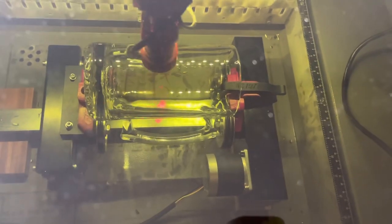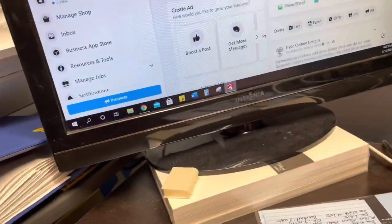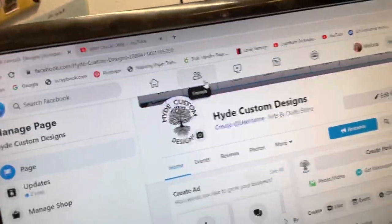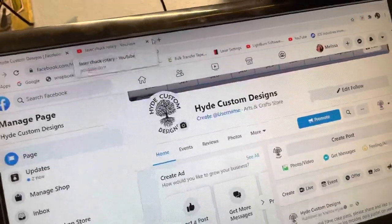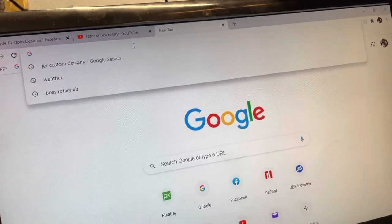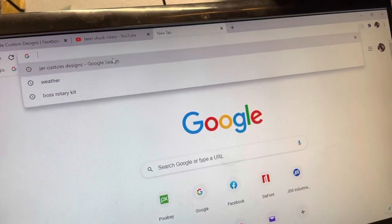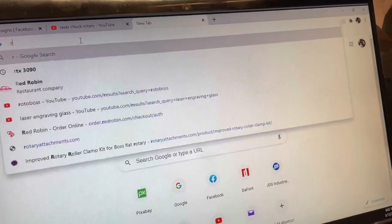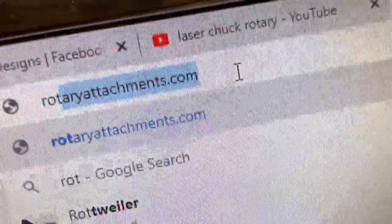The red and black pieces there on the end and then the red piece down here, that's aftermarket. That actually did not come with the machine. I had to buy that separate. And I'm trying to remember what the website is and I'll show you where I purchased it from. I believe it is rotaryattachments.com.